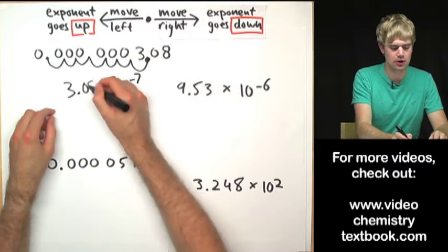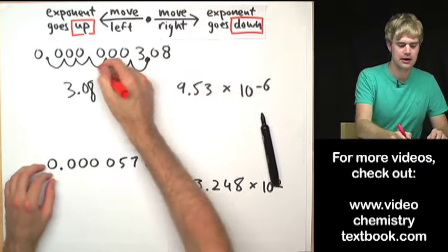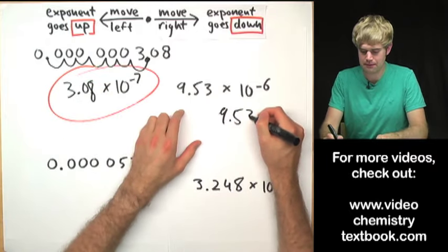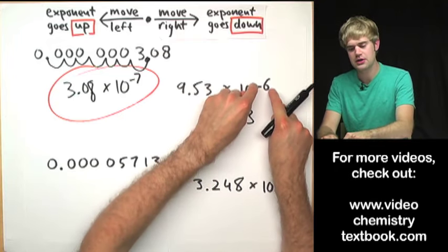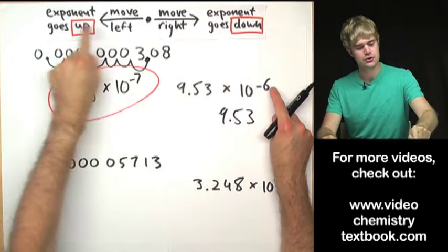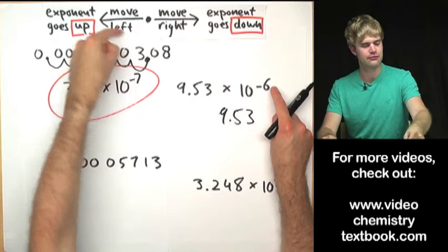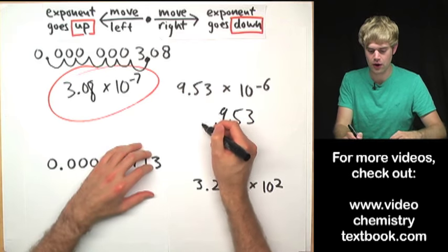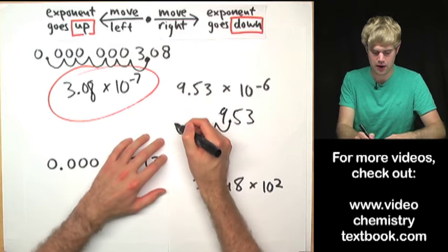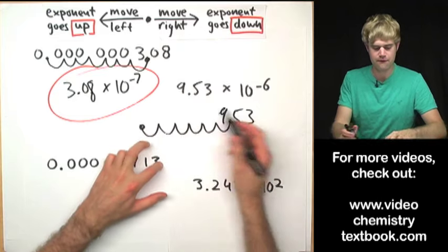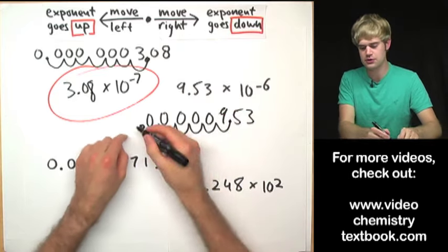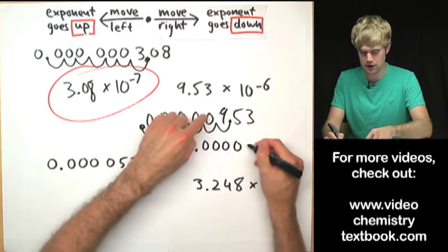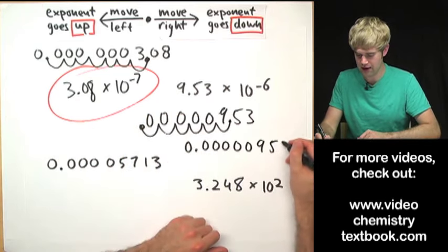3.08 times 10 to the negative seventh is given. Taking 9.53 times 10 to the negative sixth out of scientific notation: starting at negative sixth, move to zero, so move the decimal place to the left — negative fifth, negative fourth, negative third, negative second, negative first, zero. Fill each new space with a zero and the result is 0.0000953.